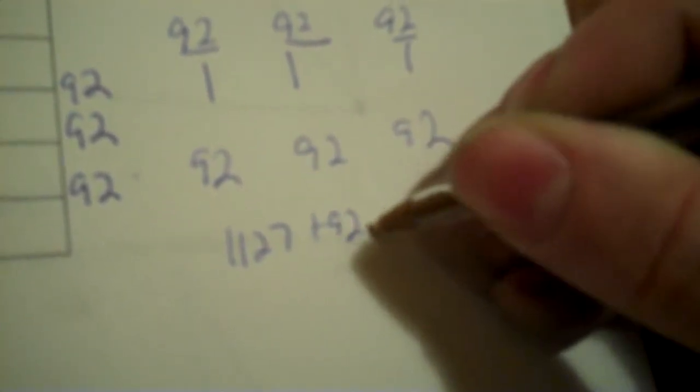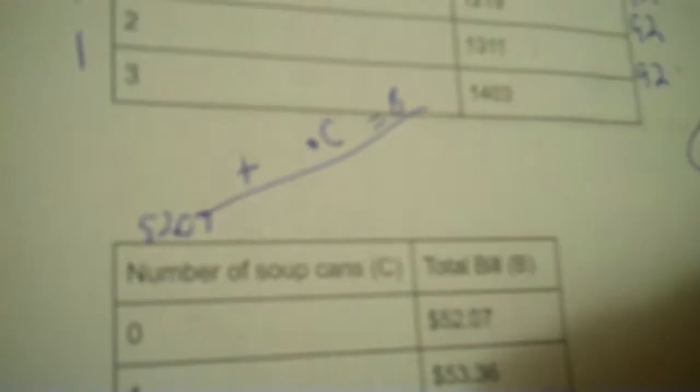So, that's going to be your times on your H. So, now you have your equation. Just write it out. Write it over here. 1127 plus 92 times H equals F. Okay? And there you go. Okay, next one. Equals B. Well, B starts at 52.07. And then I add something. I don't know what yet. Times C. Because B depends on C. Okay. So, C is soup cans. B is total bill.